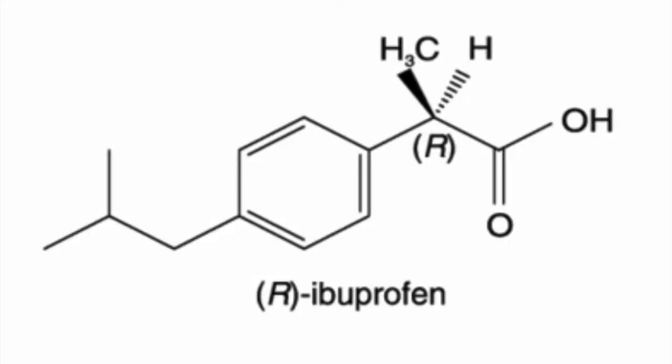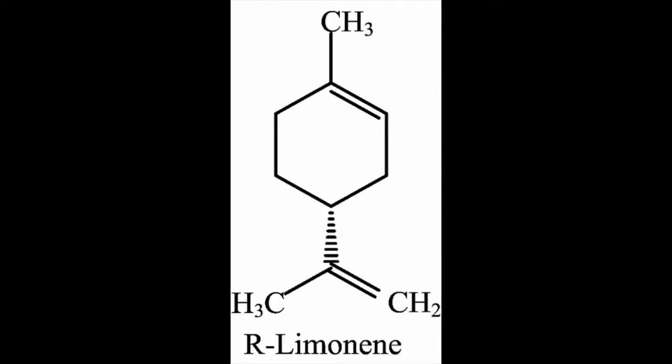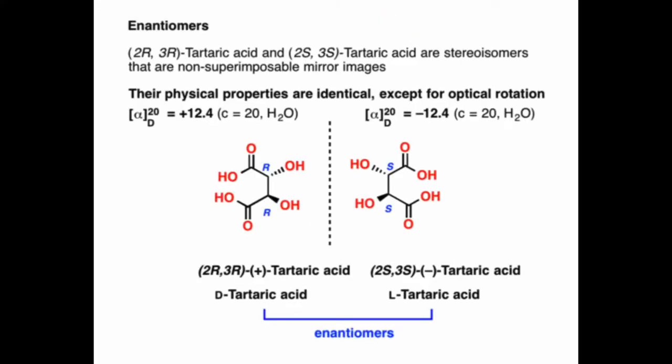For example, R-ibuprofen rotates to the left, while R-limonene rotates to the right. Additionally, different pairs of enantiomers rotate light with different magnitudes.